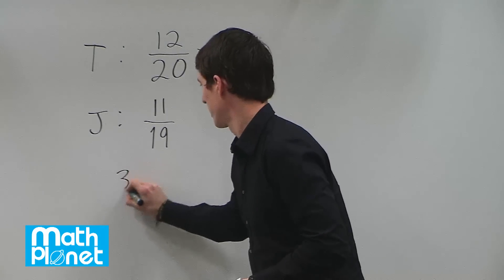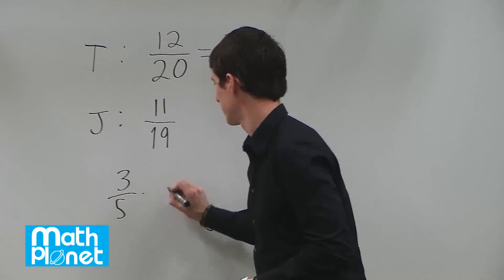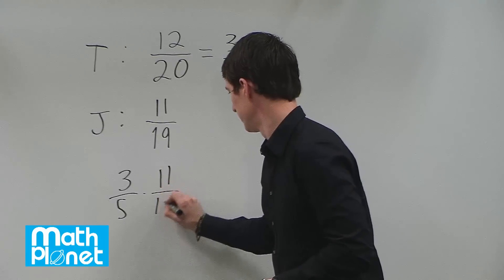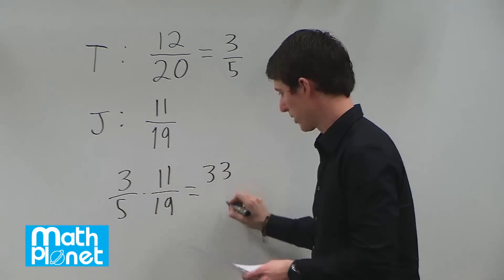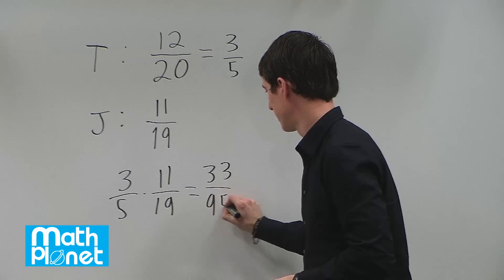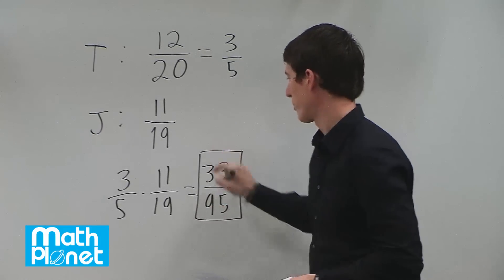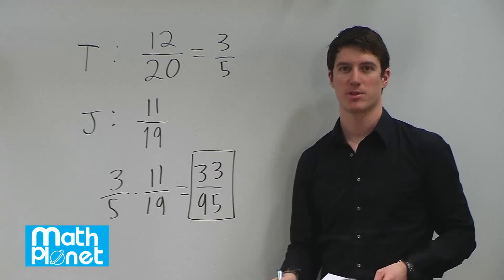So the product of that is 3 fifths times 11 nineteenths, which comes out to be 33 over 95. So that's the probability that both Tina and James going first and second will get that extra chocolate bar.